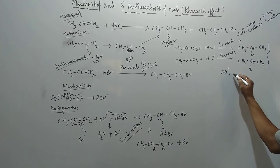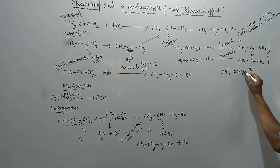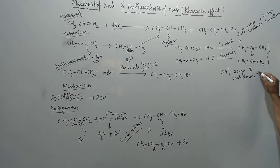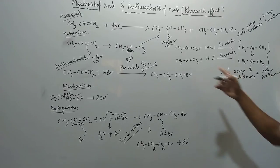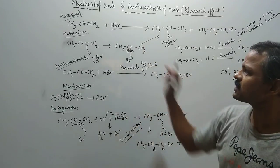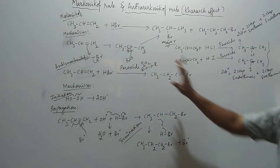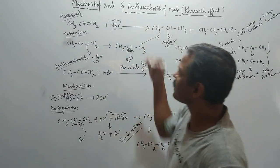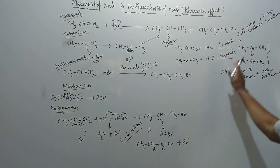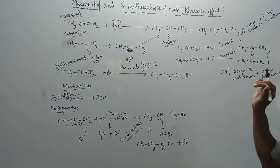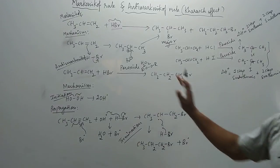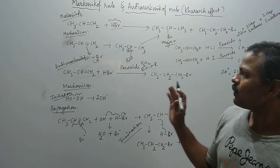And in the second one, the enthalpy of the second one here: the first step is endothermic and the second step is exothermic reaction. It cancels out the peroxide effect and it favors the Markovnikov rule. But whereas in the case of hydrobromic acid, both first step and second step are exothermic reaction, hence it favors the Markovnikov rule.